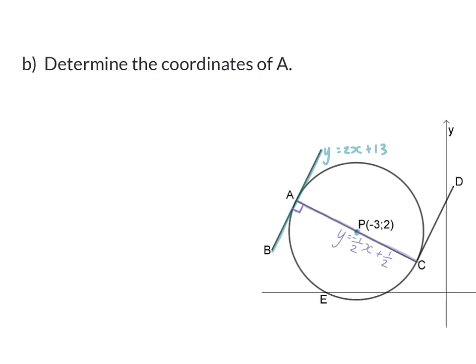Question b: Determine the coordinates of A. Now point A is the point of intersection of our tangent and diameter. To calculate a point of intersection we put the two equations equal to each other.